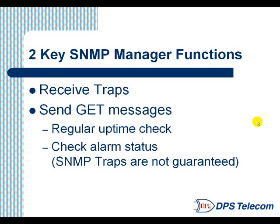That serves a couple important functions. First, it serves as a regular uptime check. If you program Tmon to send a GET message to a device every few minutes, you'll know very quickly if that device stops responding and you can send someone out to check on it. You can also check on alarm status. This is important because SNMP traps aren't guaranteed to be delivered. If something goes wrong and a trap doesn't make it to your manager, you simply have no way of knowing — unless you can send a GET message to that device and ask it to update you on the status of its current alarms. Then you can examine its response and see if anything's out of sync.